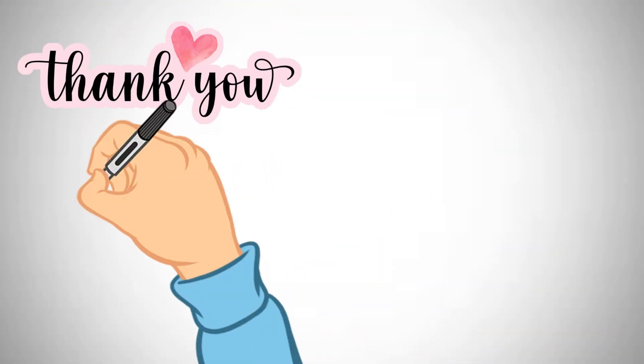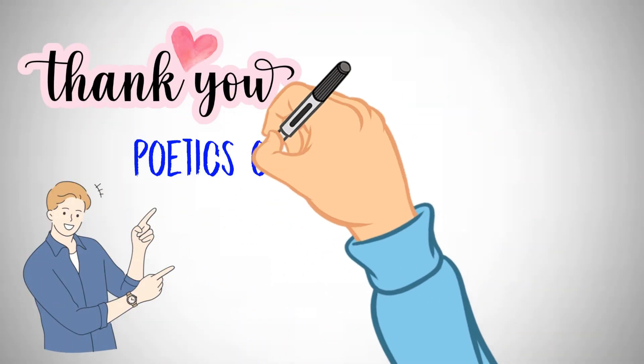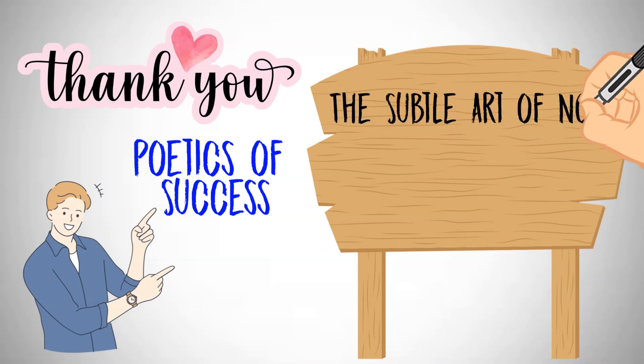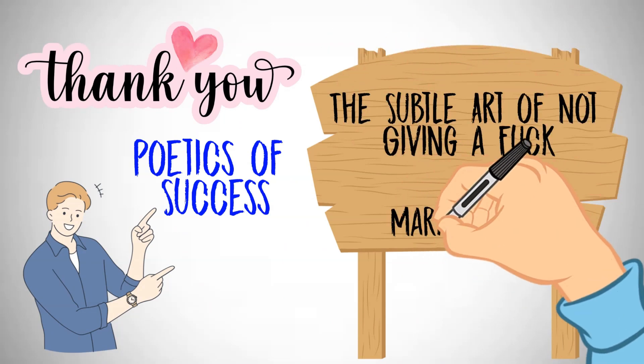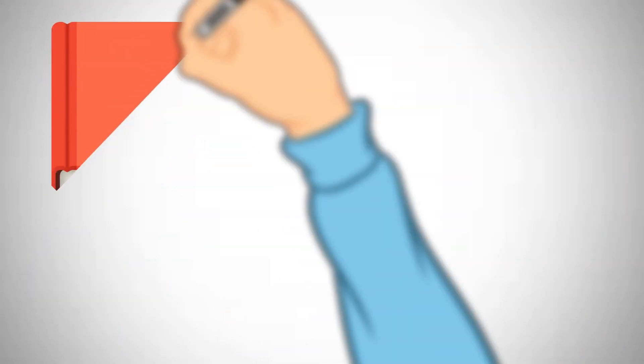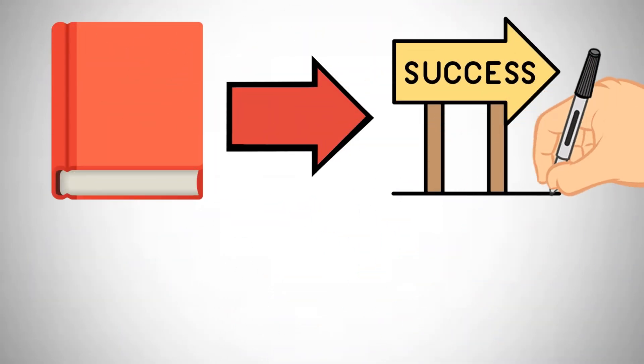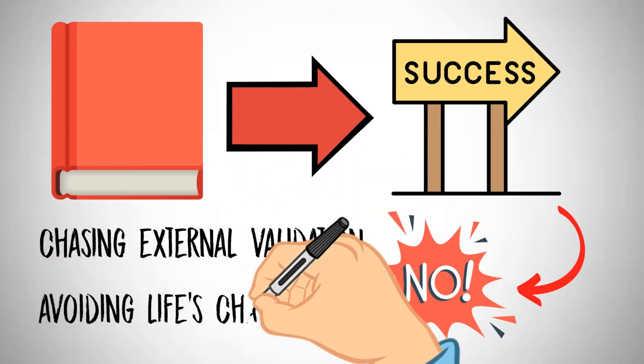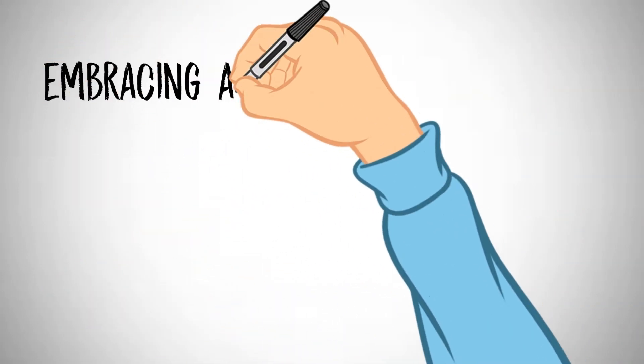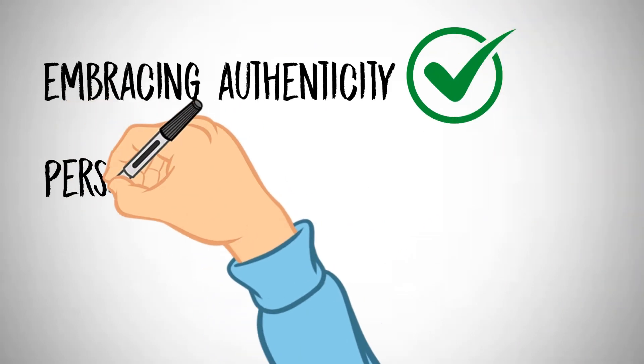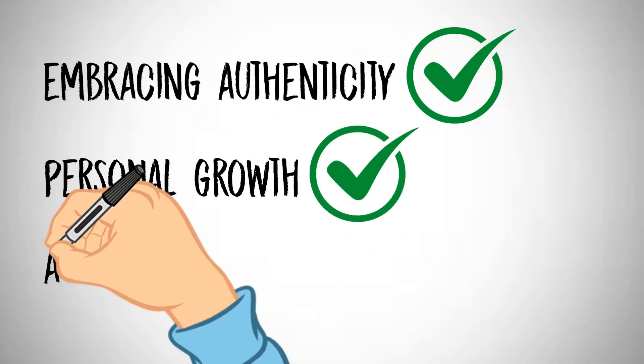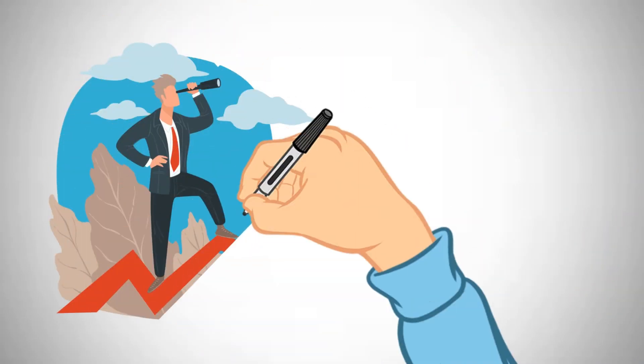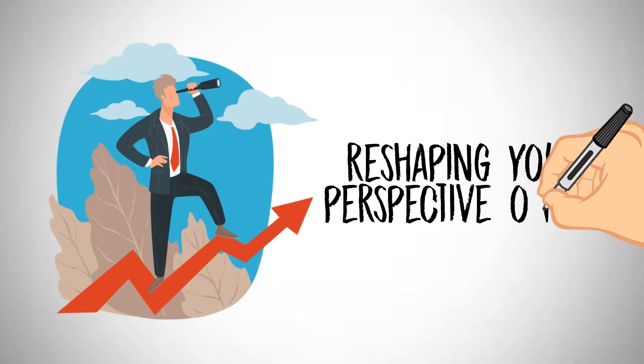Thank you for joining us today on Poetics of Success to explore the key lessons from The Subtle Art of Not Giving a Fuck by Mark Manson. This book reminds us that success isn't about chasing external validation or avoiding life's challenges, but rather it's about embracing authenticity, personal growth and a focus on what truly matters. It is all about reshaping your perspective on life first.